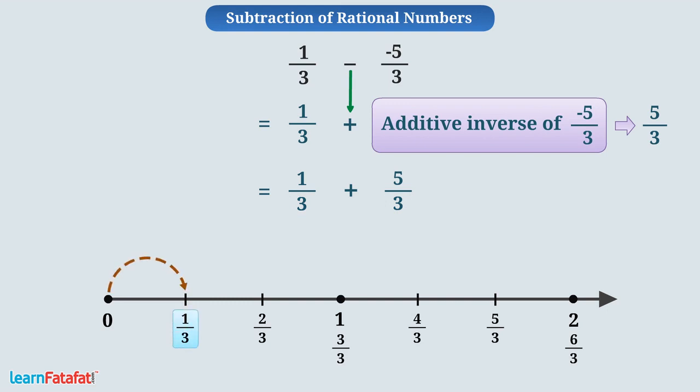Locate 1 by 3. Numerator of second number is positive 5, so we take 5 jumps towards right from 1 by 3. With which we reach at 6 by 3 or simply 2. It is the result.